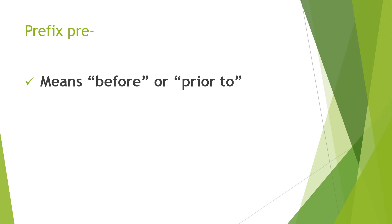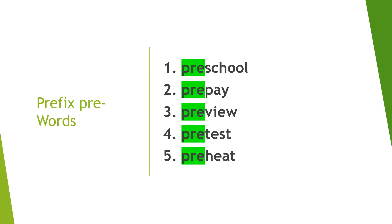And lastly, the prefix pre means before or prior to. This week, the words that begin with the prefix pre are pre-school, pre-pay, pre-view, pre-test, and pre-heat. Remember, pre means before. So a word like pre-heat would be you would heat the oven to 400 degrees before you put in the pizza. A pre-view would be like when you went to see a movie — before the actual movie starts, they show you little pre-views, so those are little views before the whole movie actually comes out.